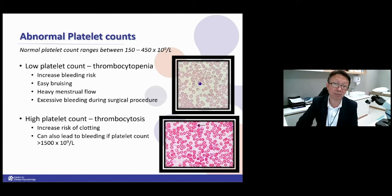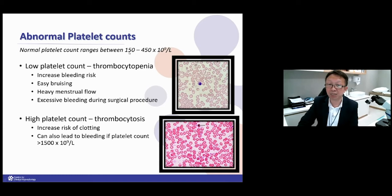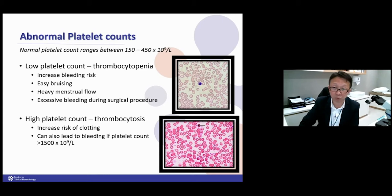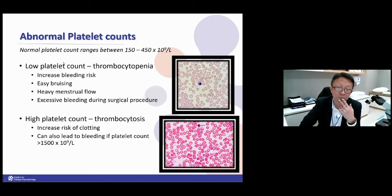Next, the second part is the platelet problem. Normal platelet count ranges between 150,000 to 450,000. The function of platelets is to stop bleeding. Our blood vessels have small little bleeds everywhere in the body, and platelets quickly block the breakage of the blood vessel. If you have no platelet at all, you will develop petechiae — the red dots on your skin.